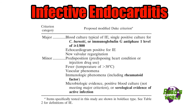The diagnostic criteria is based on the modified Duke criteria, which has major and minor categories. In the major category: echocardiogram positive for infective endocarditis, new valvular regurgitation, and blood culture typical of infective endocarditis. In the minor category: predisposition such as a heart condition or injection drug use, fever, immunologic phenomena including rheumatoid factors, and microbiological or serological evidence of active infection.